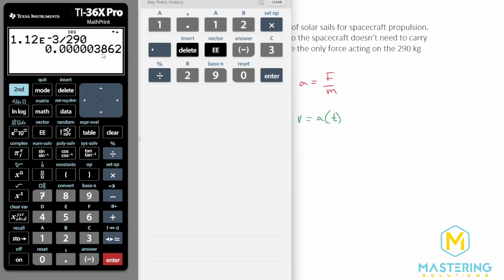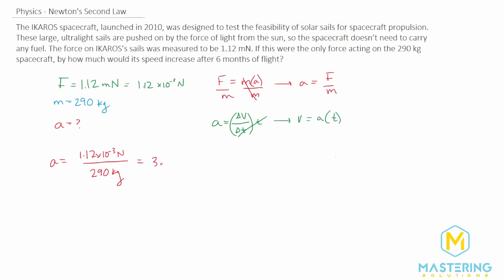So the acceleration is 3.86 times 10 to the negative 6, and that is meters per second squared.